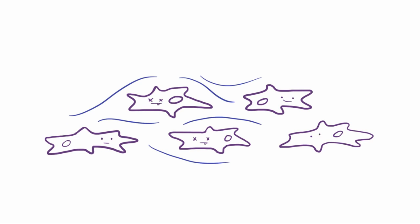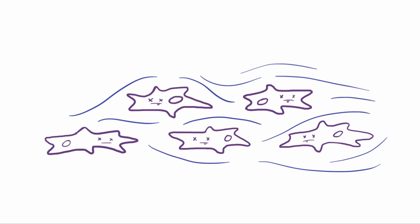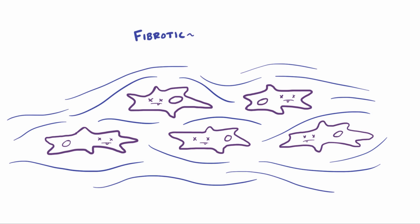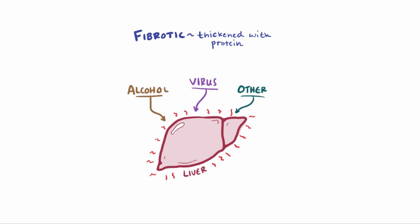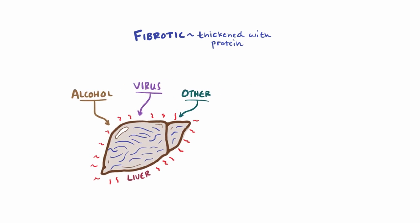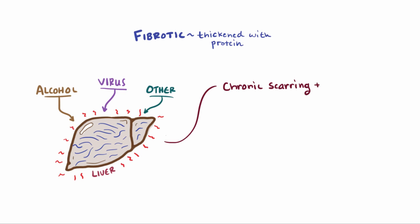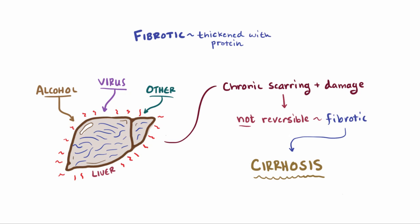When cells are injured or damaged and die off, that dead tissue becomes fibrotic — thickened with heaps of protein forming scar tissue. So when your liver is constantly forced to process alcohol, like in alcoholic liver disease, or subject to a long-term viral attack like HBV, or anything else causing chronic hepatocyte destruction and inflammation, your liver can become seriously scarred to the point where it's no longer reversible. At that point it becomes fibrotic, and in the liver we call this process cirrhosis. Because it's usually irreversible, cirrhosis is often referred to as end-stage or late-stage liver damage.